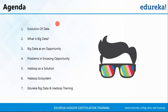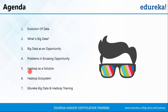We'll begin by understanding how data evolved and how big data came into existence, then we'll see what exactly is big data and what sort of data can be considered as big data. After that we'll see how big data can be an opportunity, the various problems associated in encasing this opportunity, and how Hadoop solved these problems along with few components of the Hadoop framework. Finally we'll tell you about the big data and Hadoop training provided by Edureka and the various projects that will be part of this course.